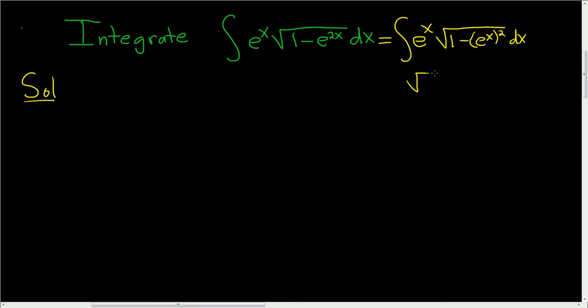So you see it fits the form a squared minus u squared. And whenever you have an integral that fits this form, you can let u be equal to a sine theta, and things should work out. So in this problem, we really have a 1 squared, so our a is 1, and our u is e to the x.